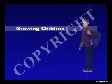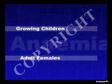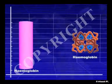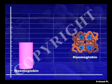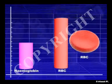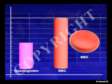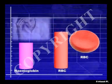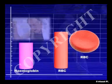Anemia is one of the more common blood disorders in growing children and adult females. The dictionary describes it as a deficiency of hemoglobin, accompanied by reduced red blood cells causing pallor, weakness and breathlessness.